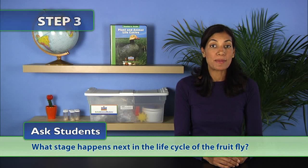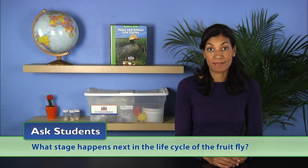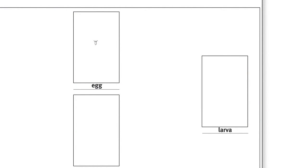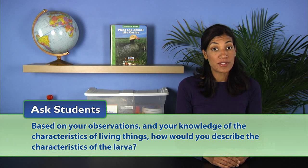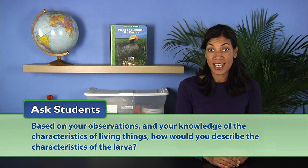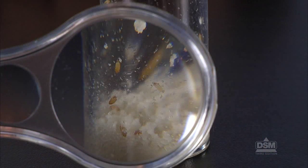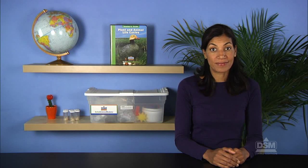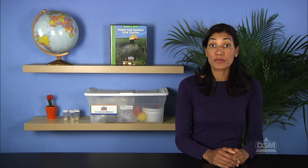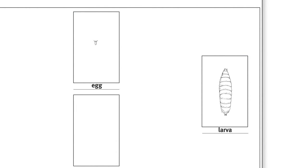Ask students what stage happens next in the life cycle of the fruit fly. Help students understand that the egg produces a larva and write the word larvae on the line below box two on the chart. Explain that larvae come from hatching eggs and ask students: how would you describe the characteristics of the larvae? Students should respond that the larva is a white worm-like creature that can crawl, eat, and take in moisture. Have a volunteer identify the picture of the fruit fly larvae and tape the picture in box two on the chart.